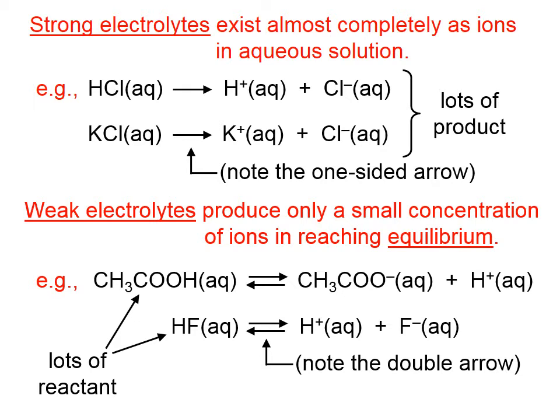When we write weak electrolyte equations, we often use a double arrow to denote that we have reached an equilibrium. At any given instant, neutral HF molecules are breaking up to yield hydrogen ions and fluoride ions. But at that same instant, hydrogen ions and fluoride ions are combining to form neutral HF molecules, so that the ratio of HF to H⁺ to F⁻ is constantly maintained.